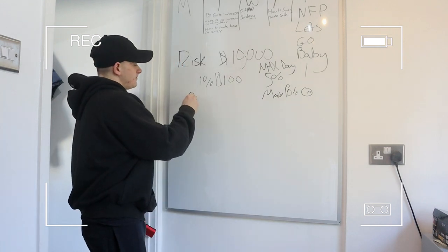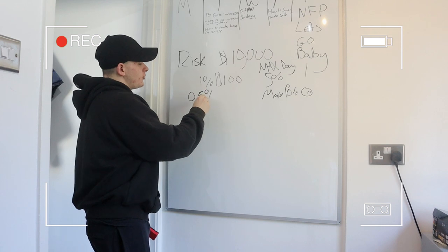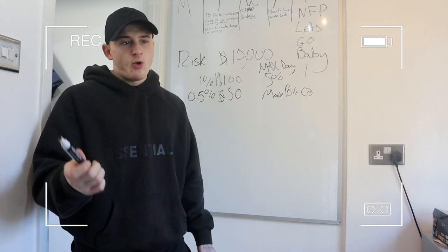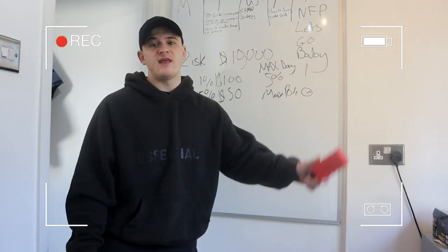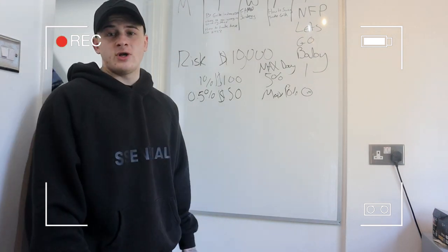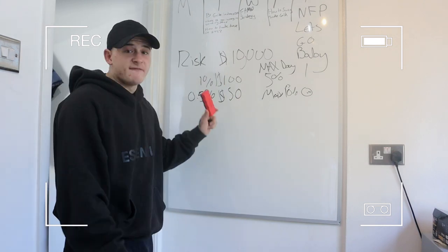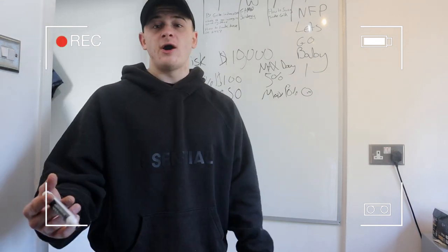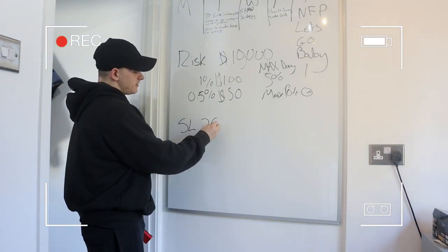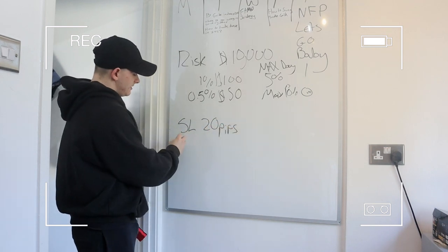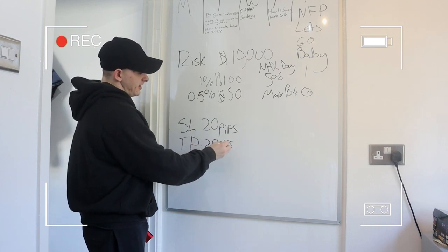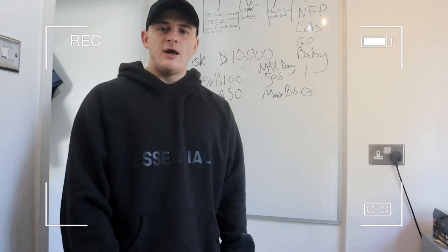I advise starting at 0.25 or 0.5 percent risk. On a $10k account, 0.5 percent is fifty dollars. People make $50 to $150 a day in regular jobs — so if your stop loss is 20 pips and your take profit is 20 pips, you can make that amount per day risking just 0.5 percent.